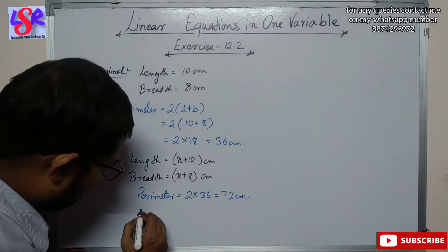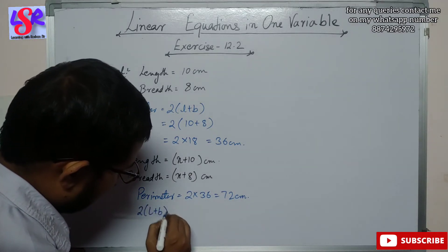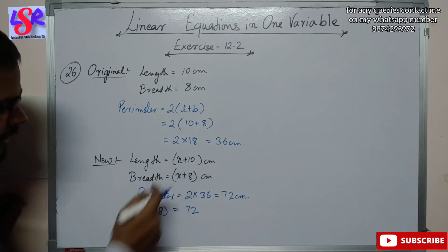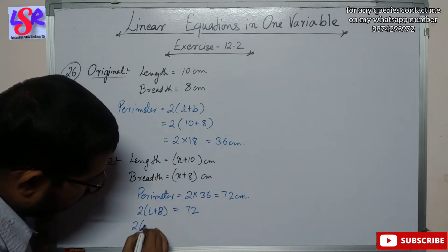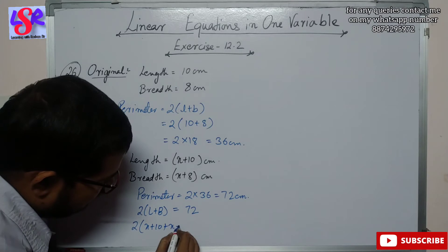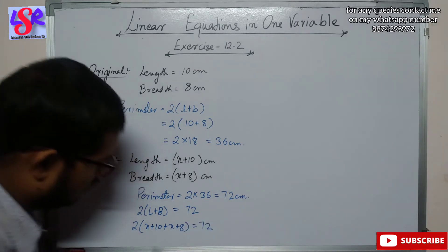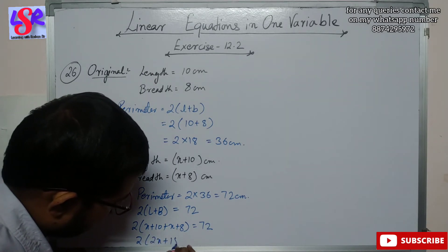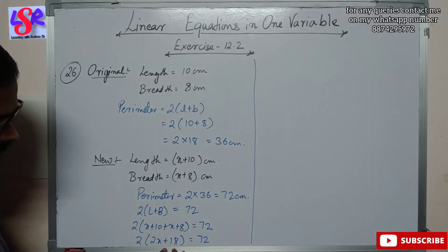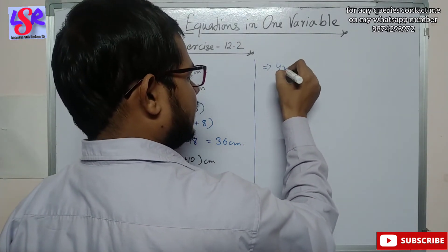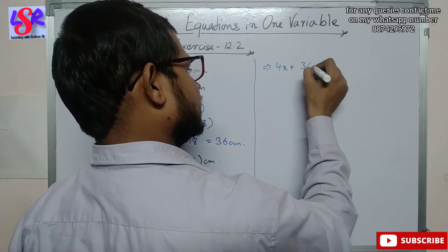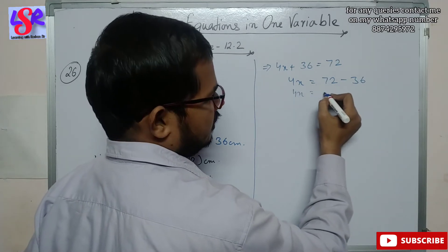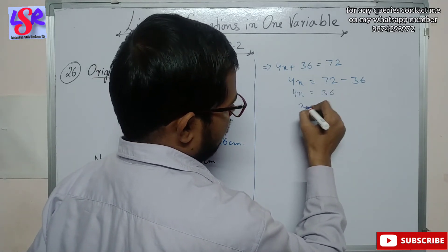Using the perimeter formula 2(l + b) = 72, and placing the values: 2 into (x plus 10 plus x plus 8) equals 72. Solving: 2 into (2x plus 18) equals 72, giving 4x plus 36 equals 72, so 4x equals 36, and x equals 9.